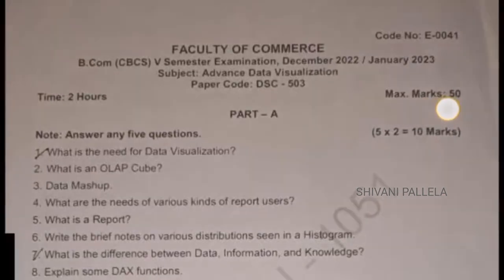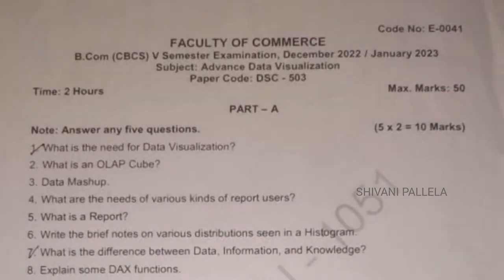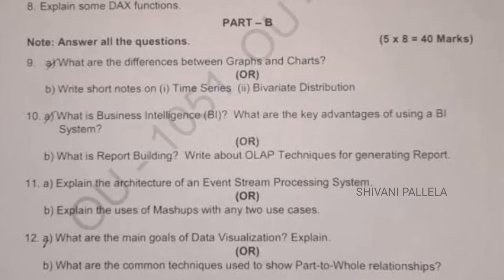Basically it's a 50 marks question paper and the time duration is two hours. In Part A, eight questions will be asked and you need to attempt any five questions, which consist of two marks each. In Part B, five questions will be given, and in each question you will have an internal choice like A as well as B.